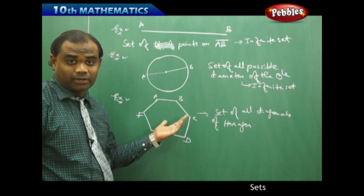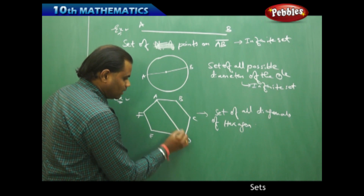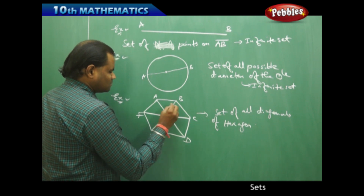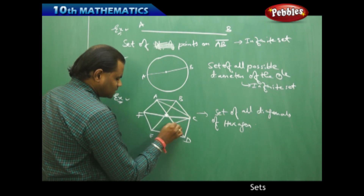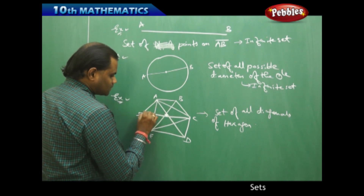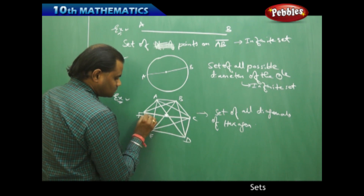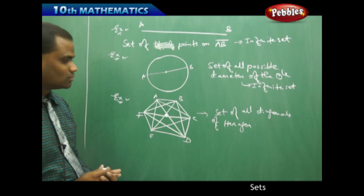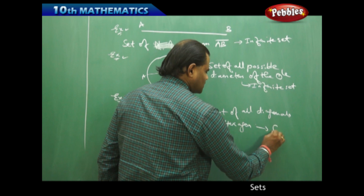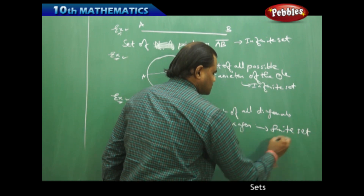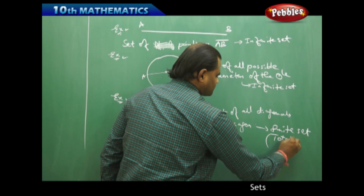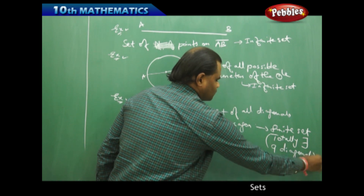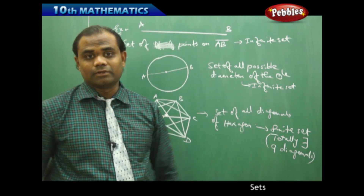Let's count how many diagonals exist for a hexagon: diagonal 1, diagonal 2, diagonal 3, diagonal 4, diagonal 5, diagonal 6, diagonal 7, diagonal 8, diagonal 9. There are nine diagonals, each connecting one vertex to another. This is a finite set — there exist exactly nine diagonals for a hexagon. This can also be generalized: the set of all diagonals of a polygon is a finite set.